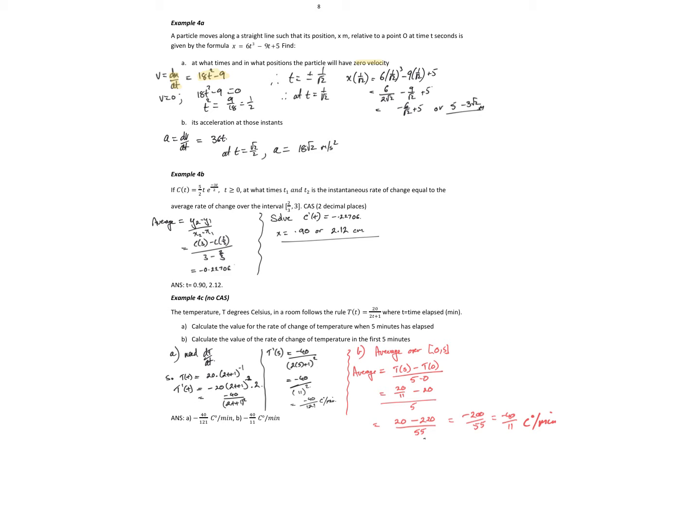When we would have zero velocity, solve that equal to zero. So I get t squared equals 9 on 18. So t is equal to plus or minus root 2. But given time negative doesn't make sense, so t is equal to 1 on root 2. So if I put 1 on root 2 into my position equation, the x equation, 6 times 1 on root 2 cubed minus 9 times 1 on root 2 plus 5, I'm going to end up with 5 minus 3 root 2 meters. So that's where I am when my velocity changes.